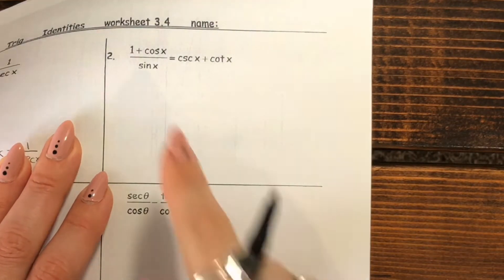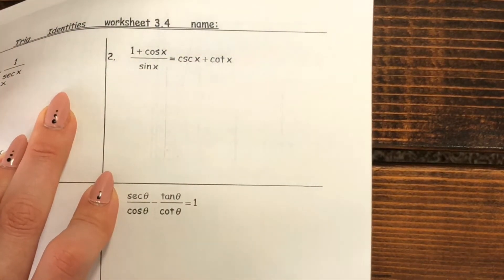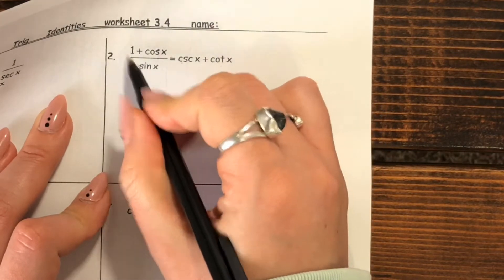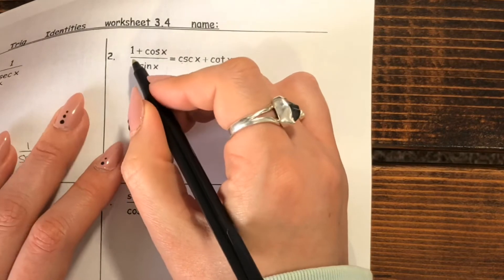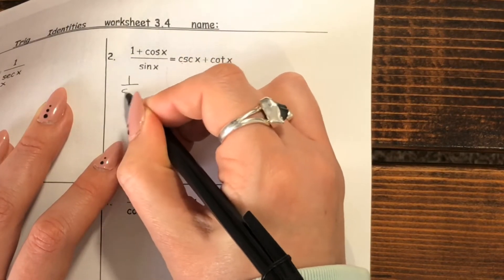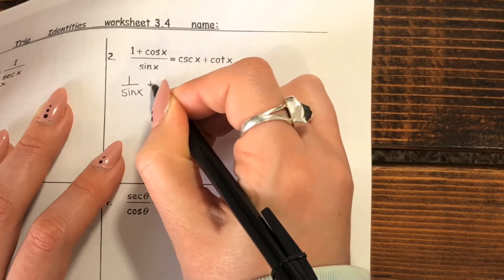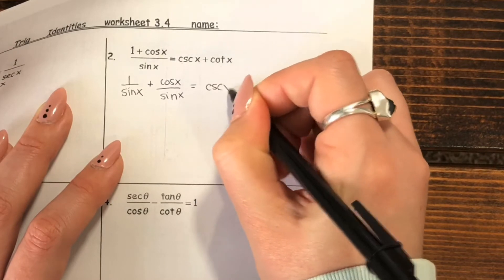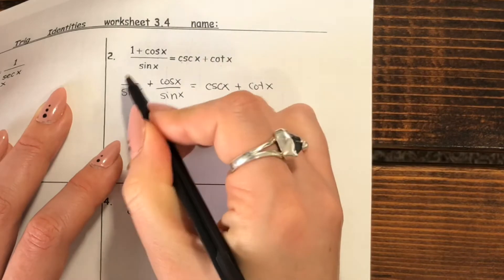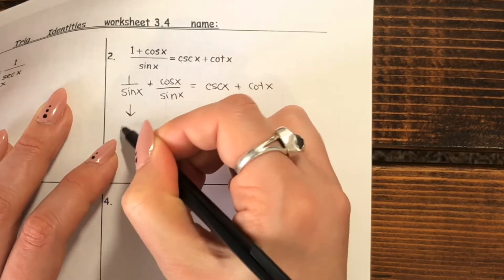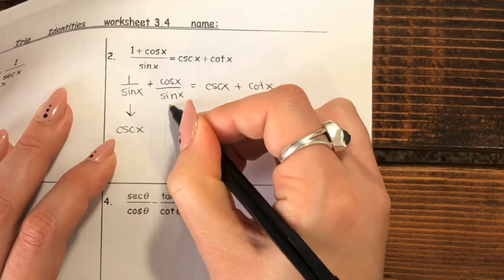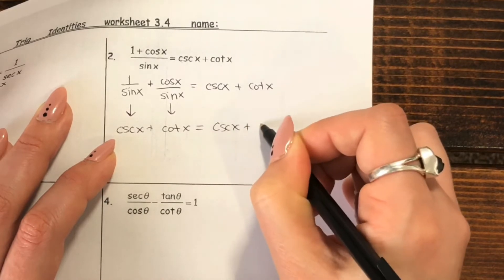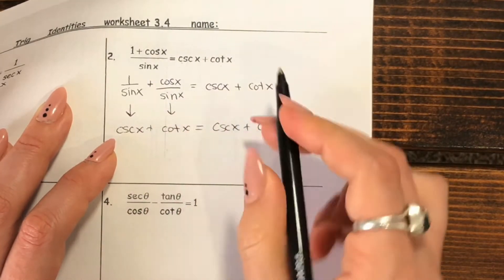For the next example, I usually try to pick the more complicated side. This one looks kind of messy — you've got that fraction. So I would pick this left side to work on. Looking at the right side, we have two terms. Right now this is only one term in one fraction, so what I would do is first split these fractions up so that I have one over sine plus cosine over sine. Then one over sine is the same as cosecant, and cosine over sine is the same as cotangent. So we actually already have cosecant plus cotangent — we're done.